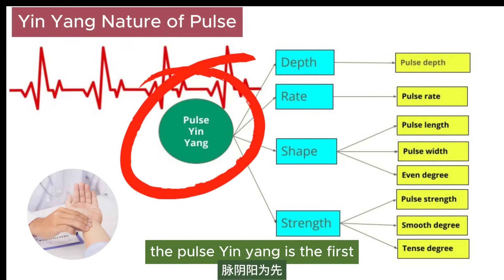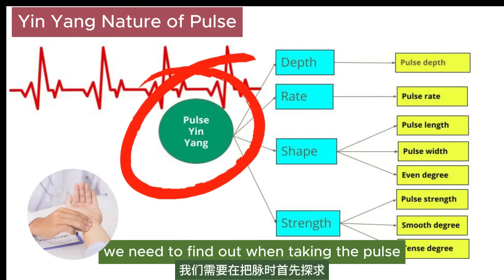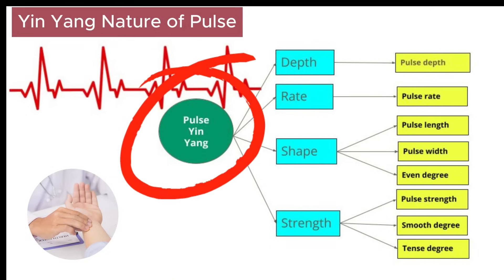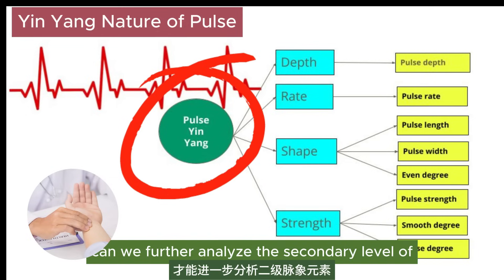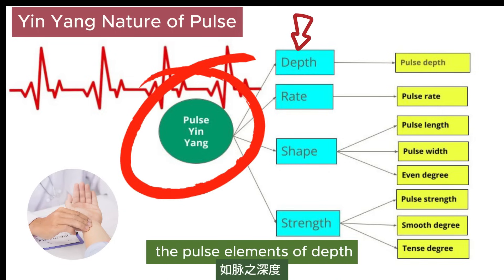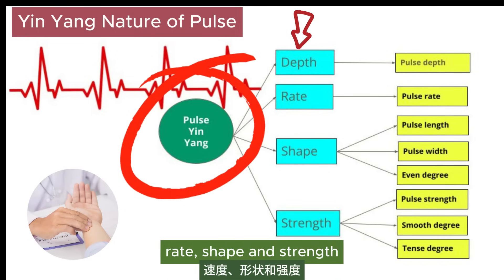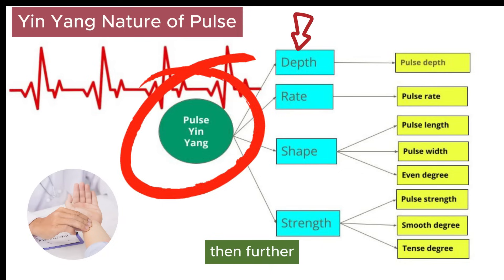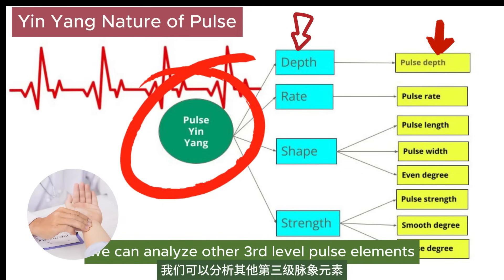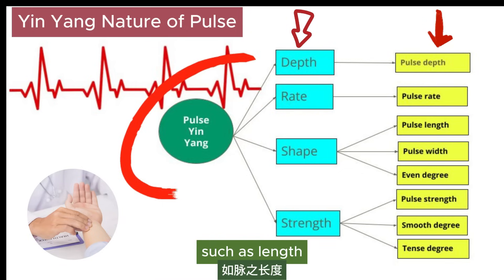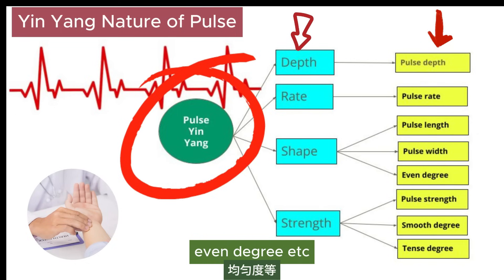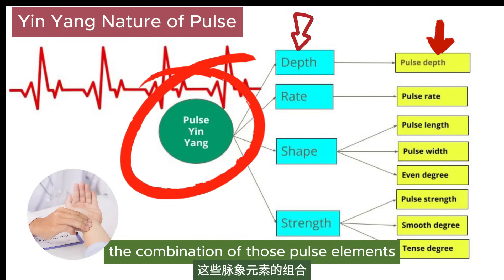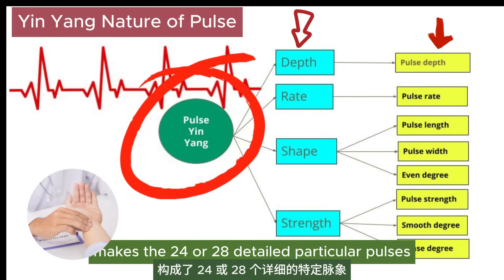The pulse yin-yang is the first conclusion we need to find out when taking the pulse. Only after we know the pulse yin-yang can we further analyze the secondary level of pulse elements of depth, rate, shape, and strength. Then further, we can analyze other third-level pulse elements, such as length, width, smooth degree, tense degree, even degree, etc. The combination of those pulse elements makes the 24 or 28 detailed particular pulses.